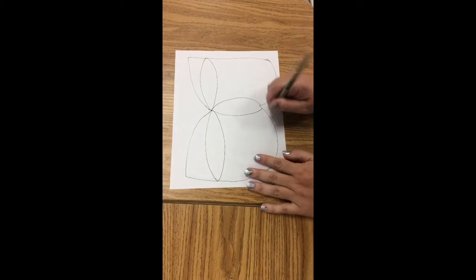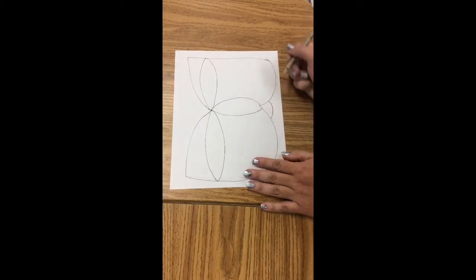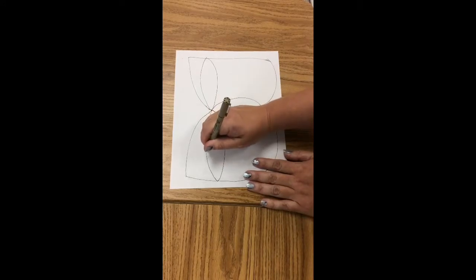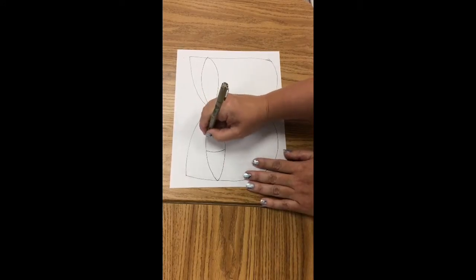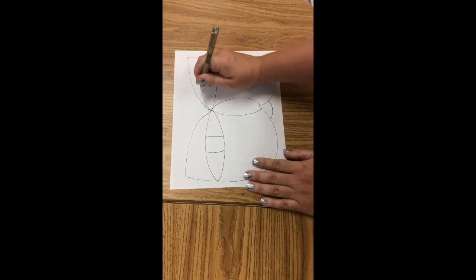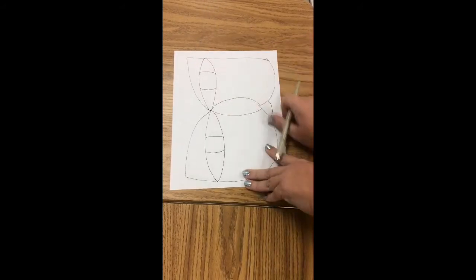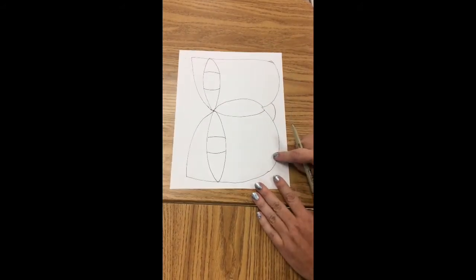Now we're gonna make a mouth, so we're just gonna go down here into this empty space and put a curve line. Then we're going to add the center part of the eye, the pupil. We can practice curve line, curve line. My eyes aren't perfect but I think it gives my cat a lot of character.